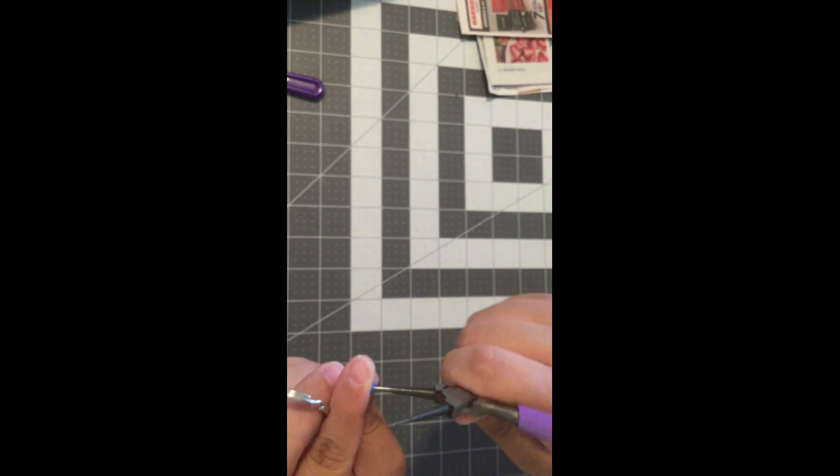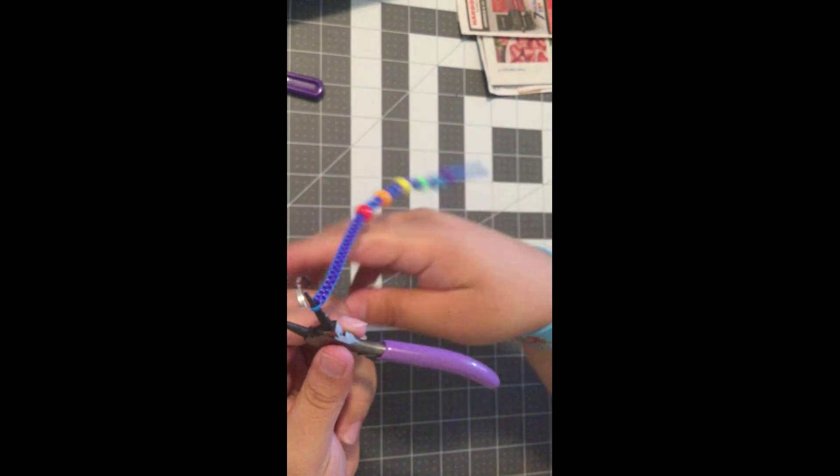Now we will go back to the top of our lanyard where we started. You will stretch out the overlapping cords so that you can slip your keyring into it.